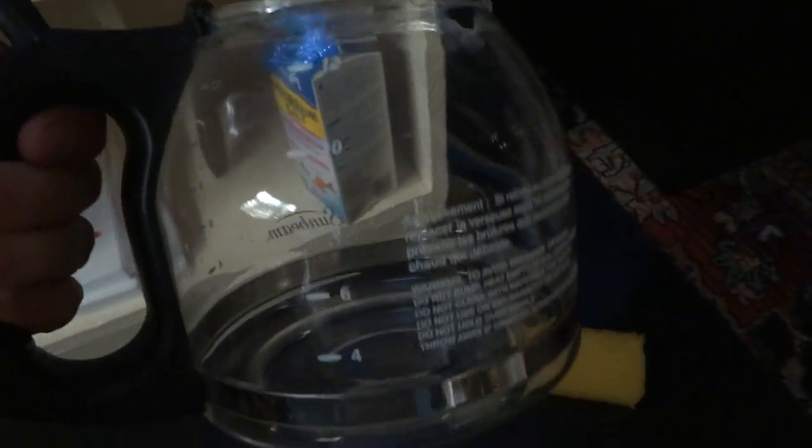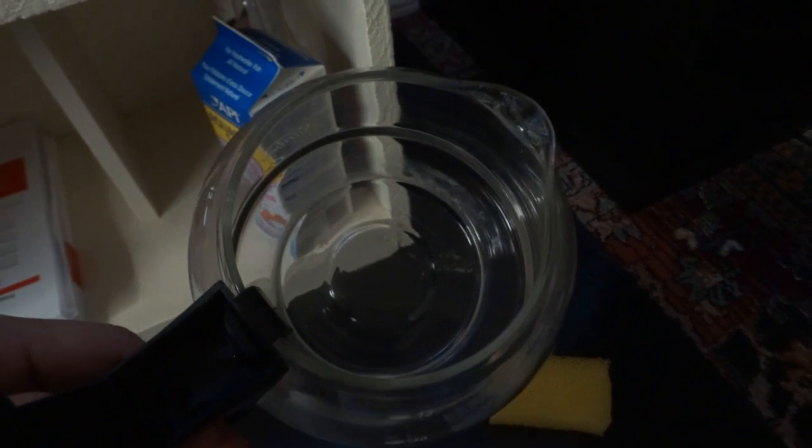Now preparing baby brine shrimp is pretty easy. You can pretty much use any type of container that's going to hold salt and baby brine shrimp in some water. Now I'm improvising and using an old coffee pot that nobody uses in my household. So I'm going to hatch baby brine shrimp in here.